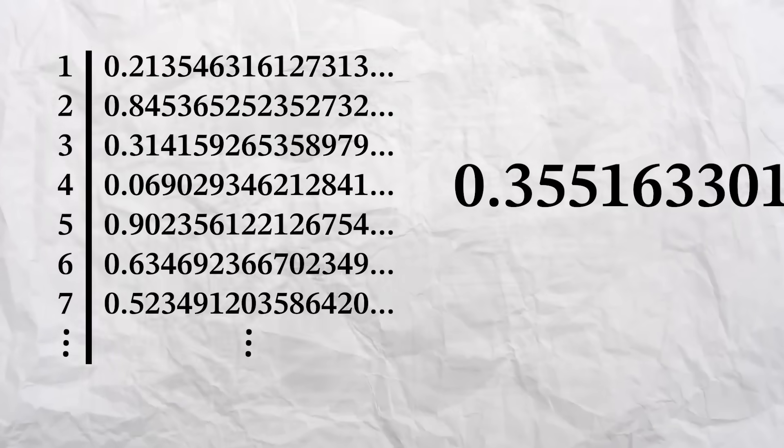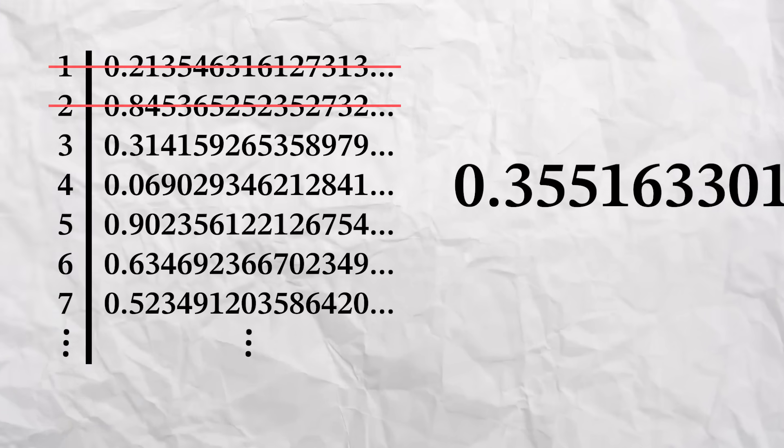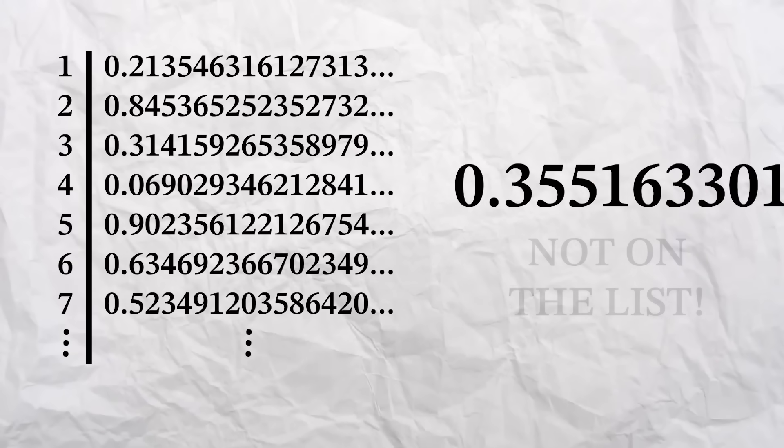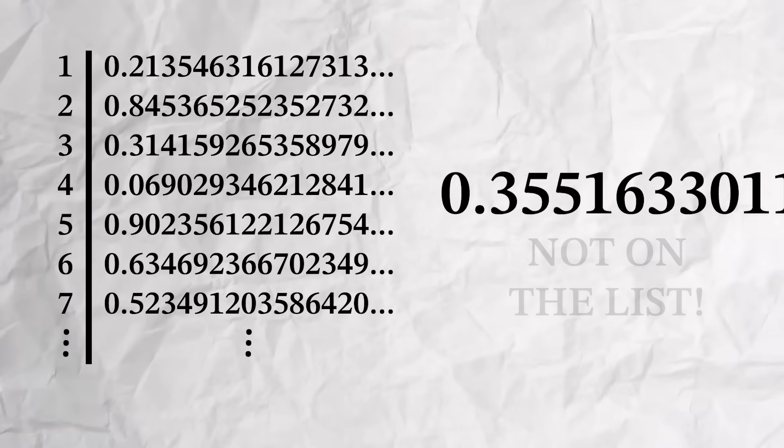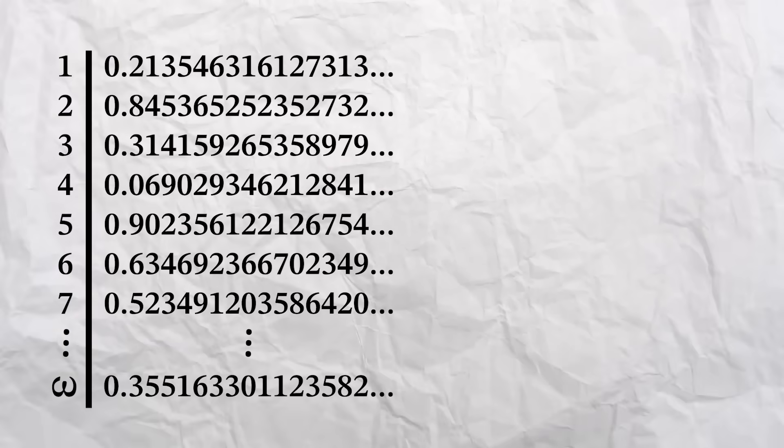Now, take this newly formed number and add one to each of its digits. Is this new number on the list? Well, I know it's not the first number because they have different first digits. I know it's not the second number because they have different second digits. I know it's not the third, fourth, fifth, or sixth. This number is not on the list. Okay, let's just add it to the end of the list, because infinity plus one is infinity. But hang on, I can just do this again, and again, and again. No matter how many times we do this, there'll always be a number which is not on the list. Now, for most of you, this is a satisfactory proof that there are more real numbers than natural numbers. But I know some of you would like to see a proper proof by contradiction.